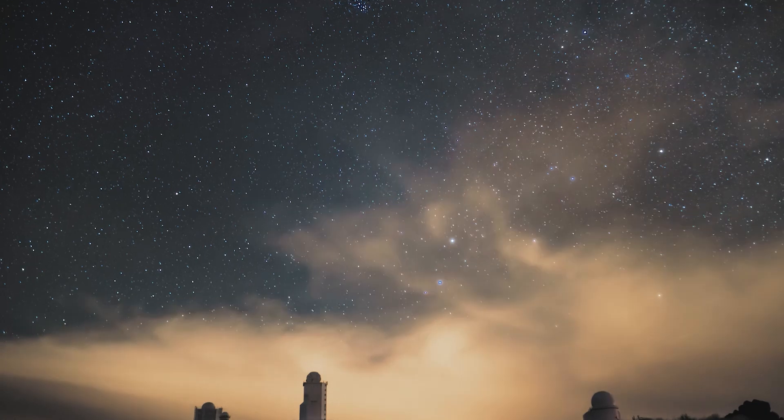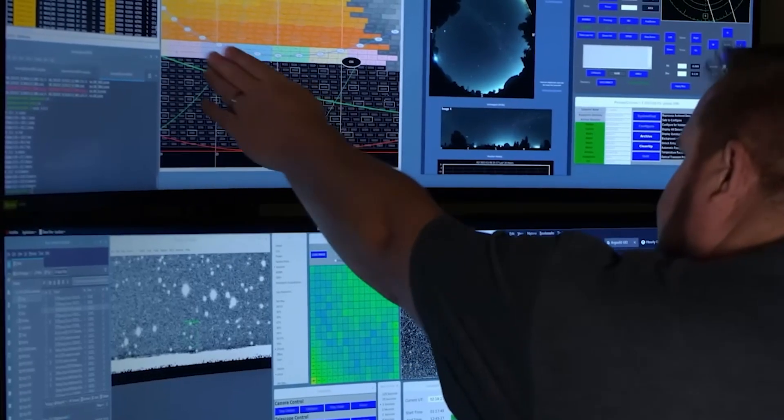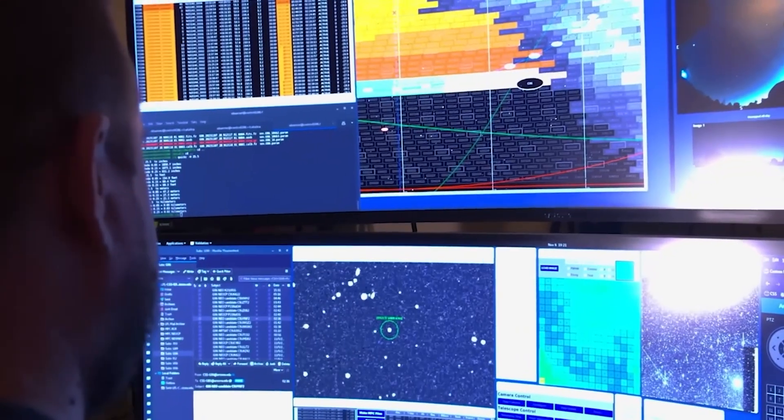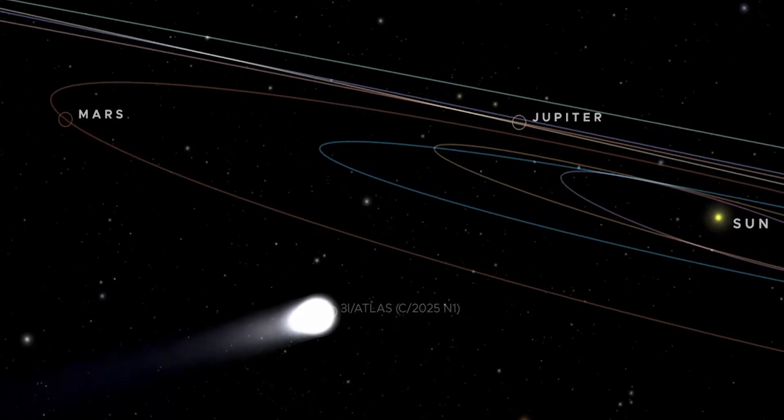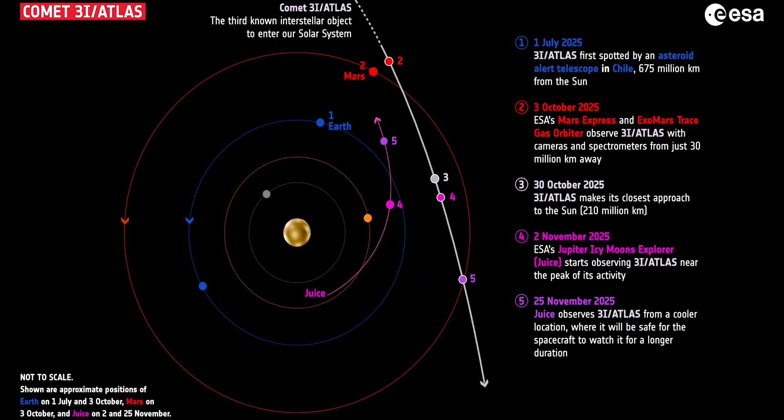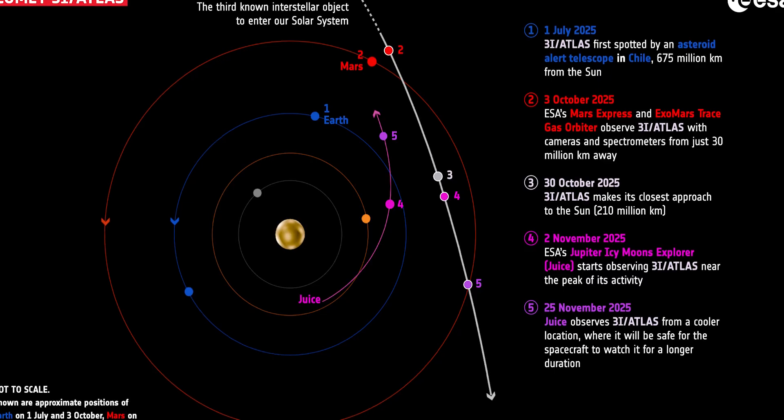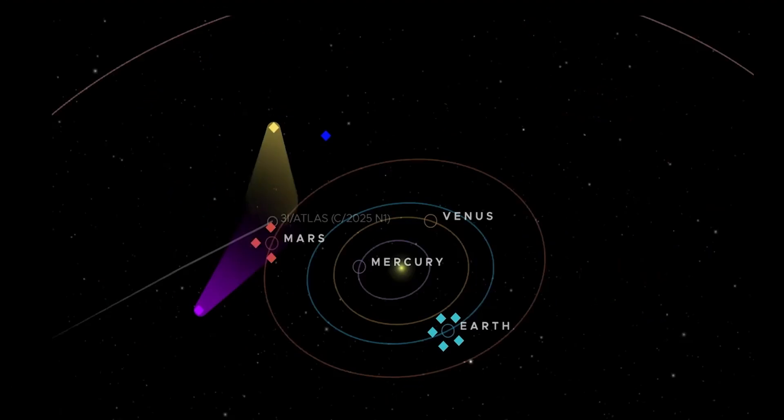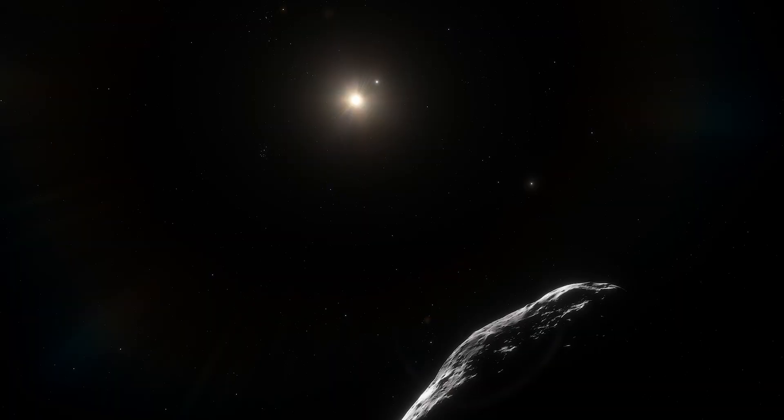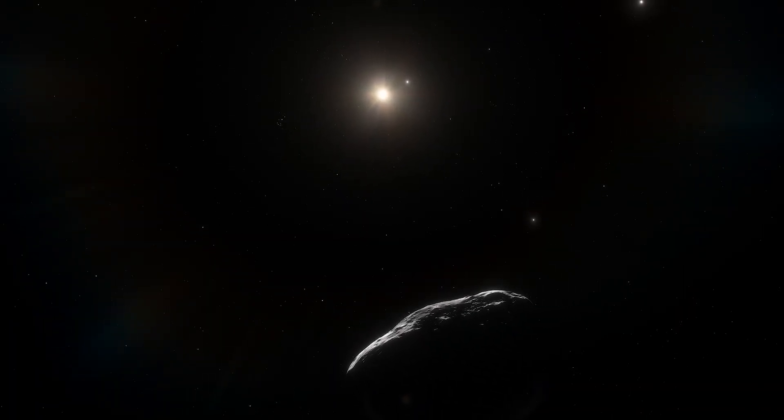Within hours of the first detection, astronomers began comparing notes. Coordinates from the Atlas Telescope were sent to the Minor Planet Center, where orbital analysts performed their standard checks. What came back was anything but standard. The path wasn't just elongated, it was hyperbolic, open-ended, and mathematically impossible for a body bound to our Sun. Even after accounting for every known gravitational influence, the orbit refused to close. That could mean only one thing. 3I Atlas was interstellar.